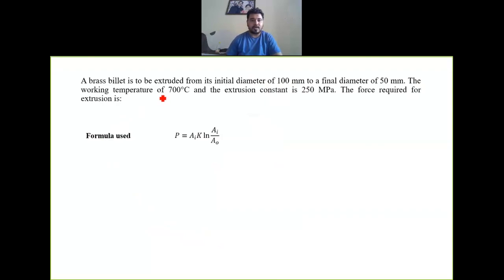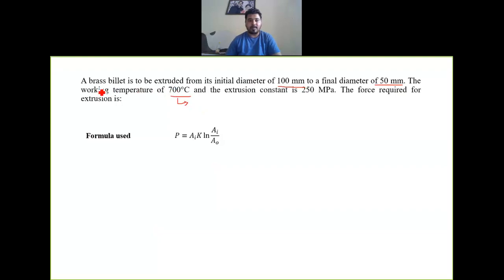First numerical: a brass billet is to be extruded from an initial diameter of 100 mm to a final diameter of 50 mm. The working temperature is 700 degrees Celsius. This is hot working because here we give the temperature above the recrystallization temperature, therefore this is a hot extrusion process.